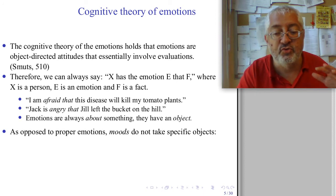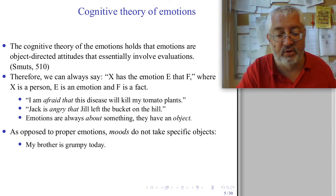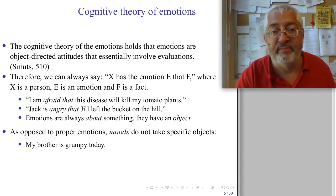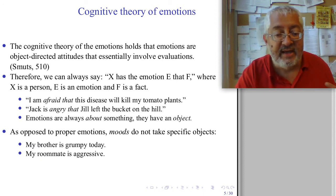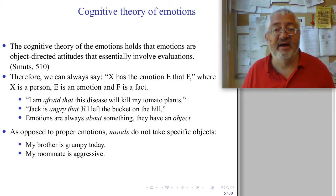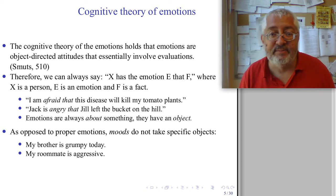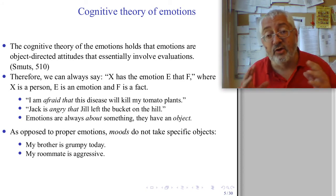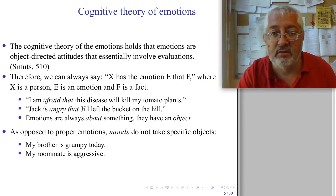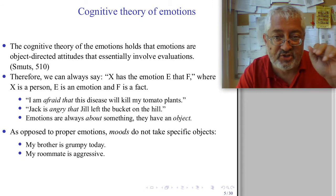If there is no such external evaluation, if there is no such object-directedness, then it's not an emotion — it is perhaps a mood. Emotions are always about something; they have an object. While moods do not take specific objects. 'My brother is grumpy today,' 'I feel depressed today,' 'my roommate is aggressive' — these are examples of moods that are not emotions because they are not object-directed.